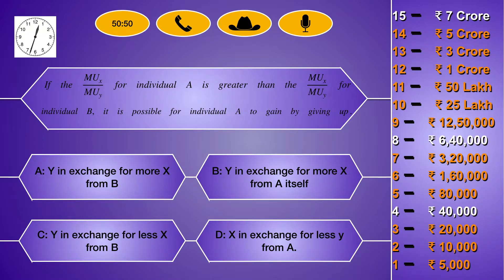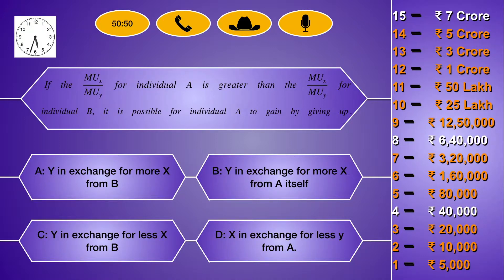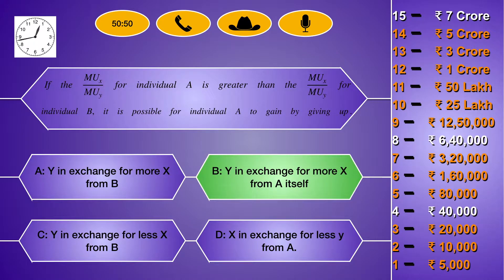If MU(X)/MU(Y) for individual A is greater than MU(X)/MU(Y) for individual B, it is possible for individual A to gain by giving up: (A) Y in exchange for more X from B, (B) Y in exchange for more X from A itself, (C) Y in exchange for less X from B, (D) X in exchange for less Y from A. The right answer is option B: Y in exchange for more X from A itself.